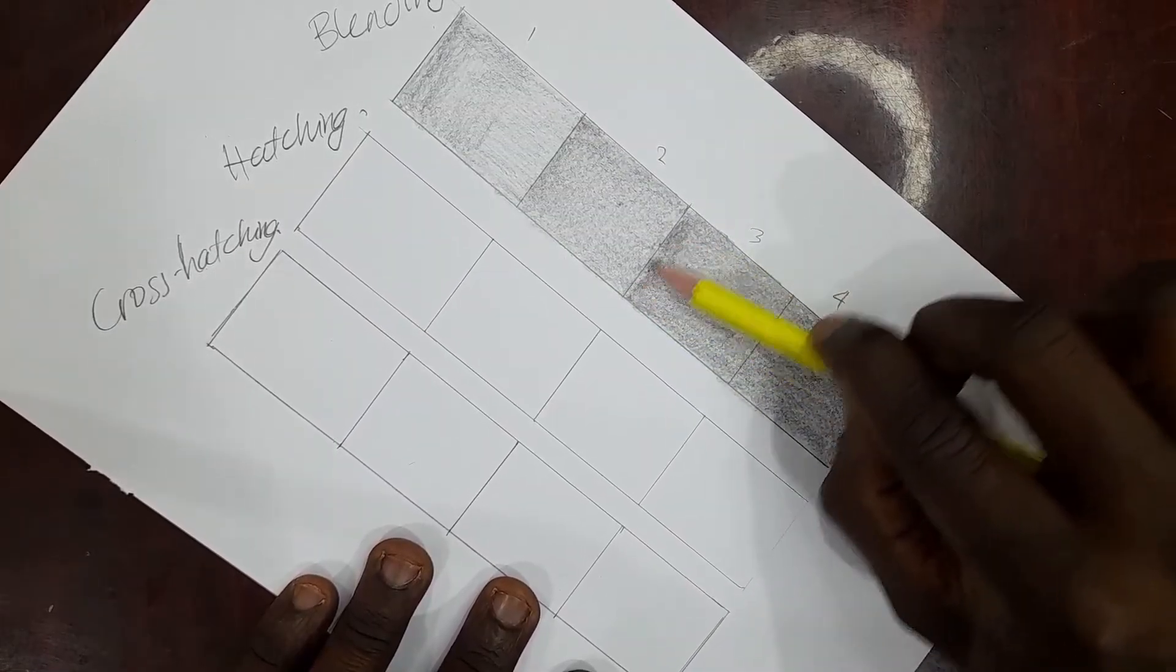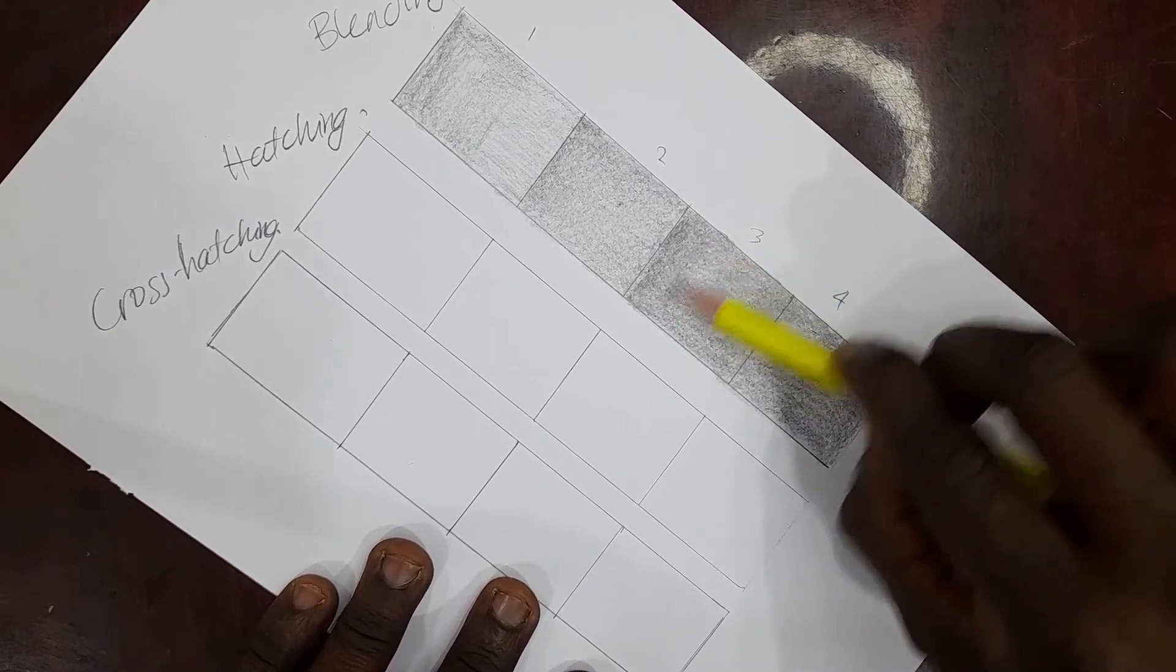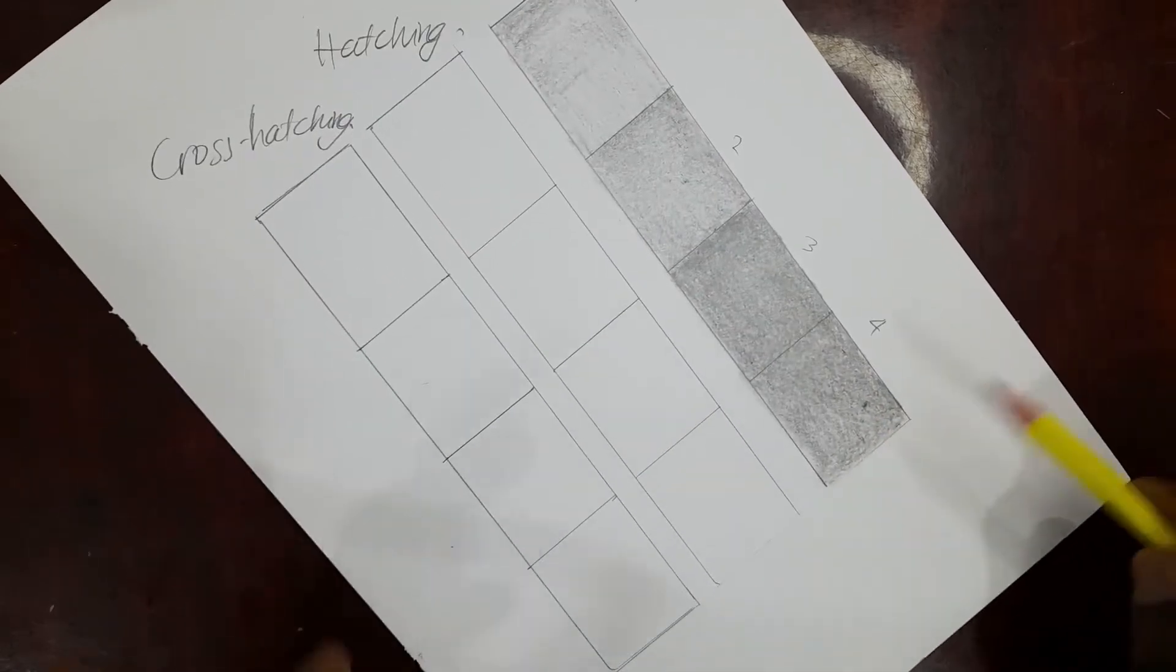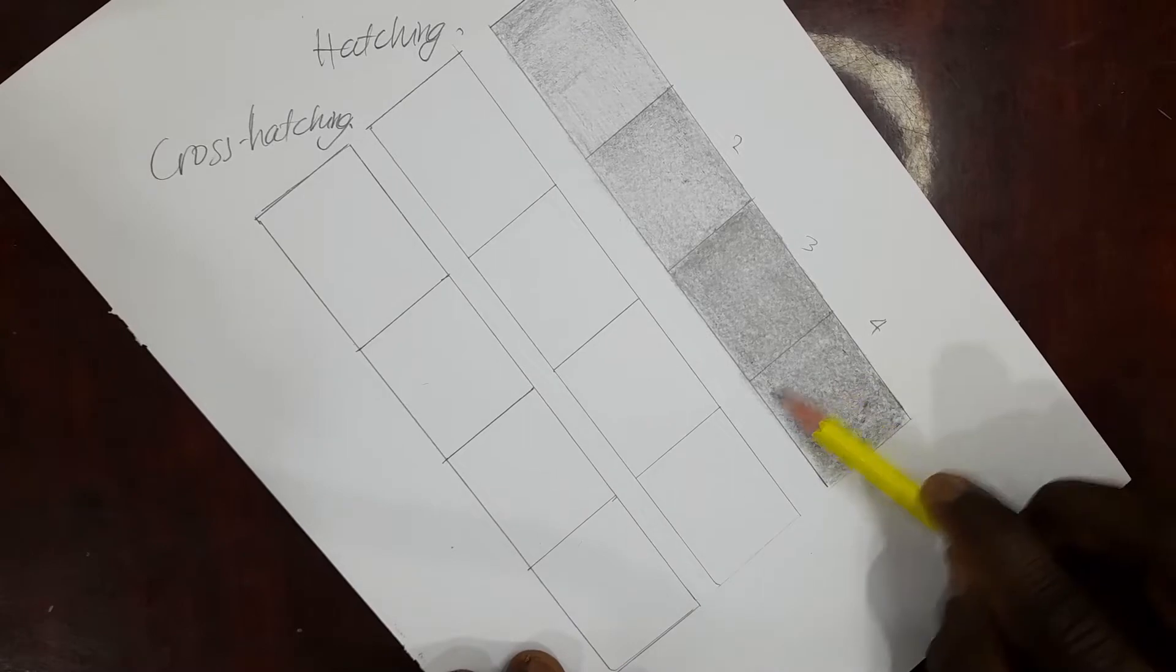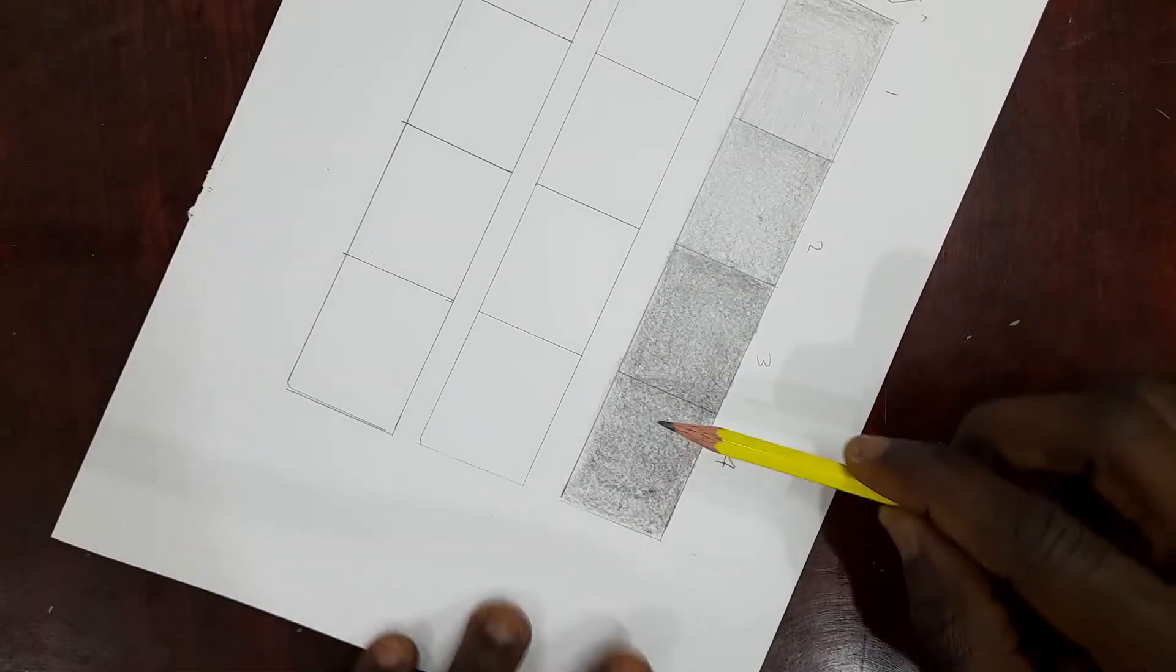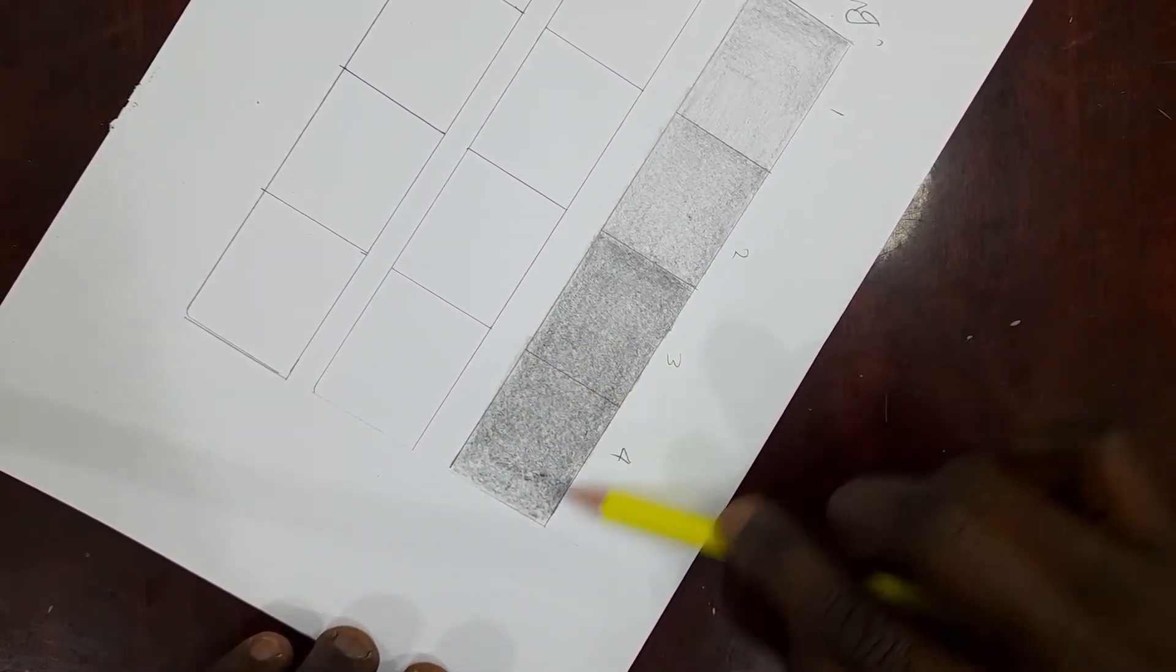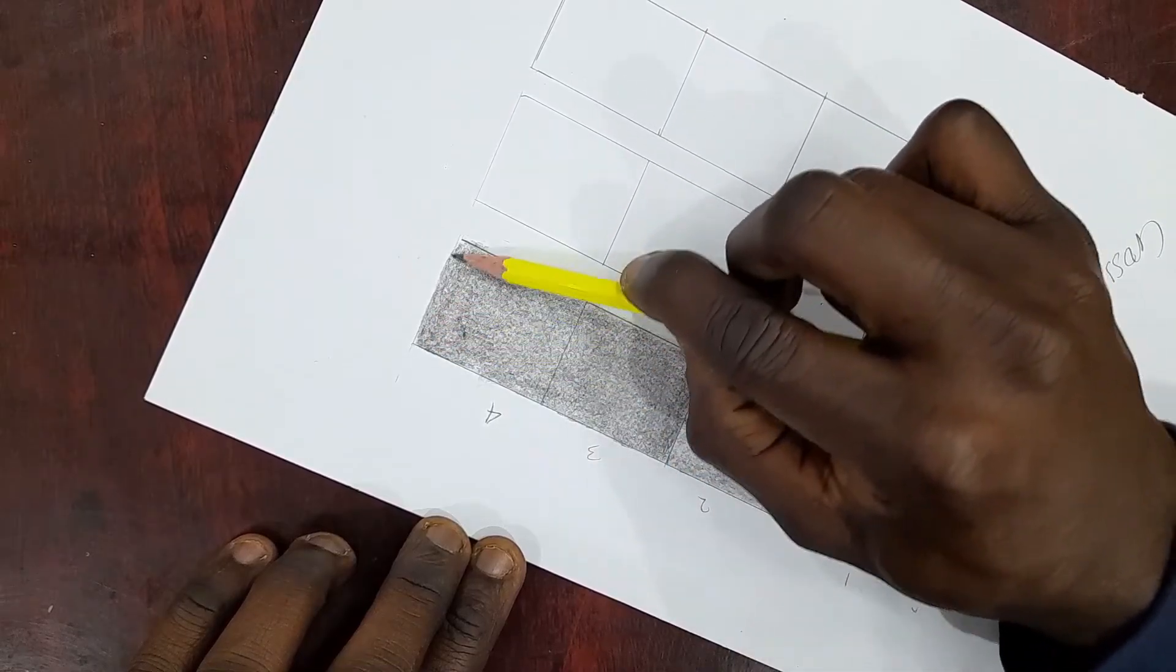If your pencil mark should go out of the line, just take an eraser and erase that part. So there are two major ways to achieve this. You keep rubbing if you want somewhere darker—that's the first way to achieve it. The second way is to apply pressure on your pencil. You can actually apply the two at the same time.